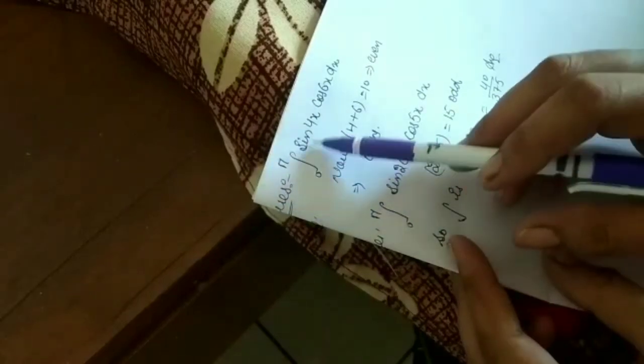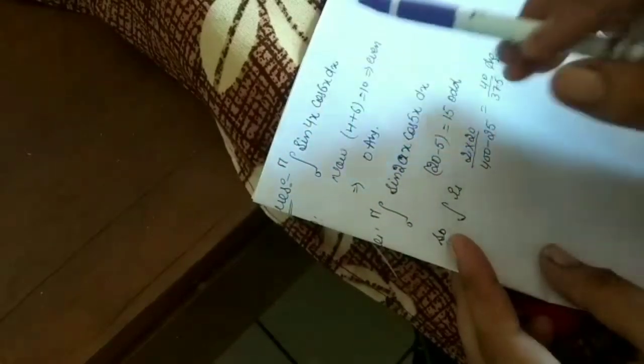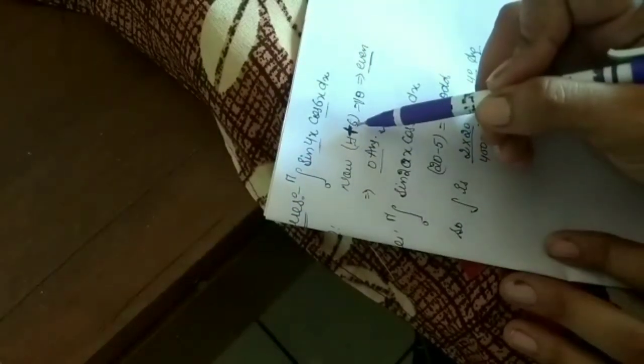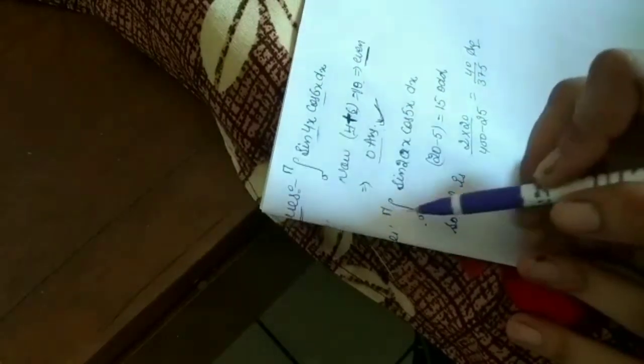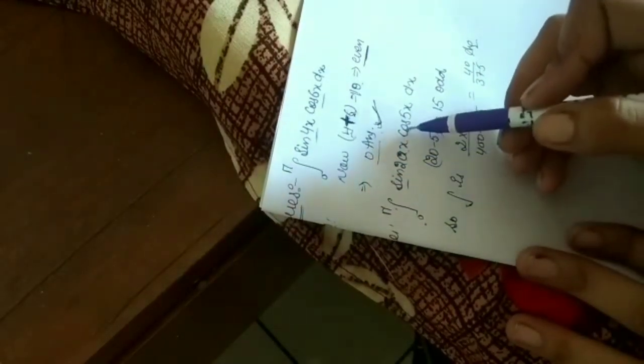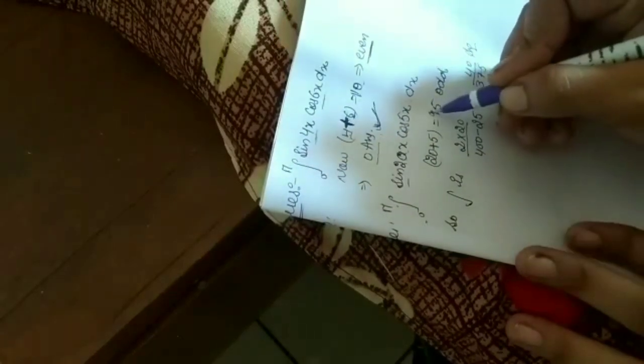Question: 0 to pi sin 4x cos 6x. First check a plus b value, that is 4 plus 6 equals 10, which is even, so answer is 0. Similarly, 0 to pi sin 20x cos 5x, 20 plus 5 is 25, which is odd.